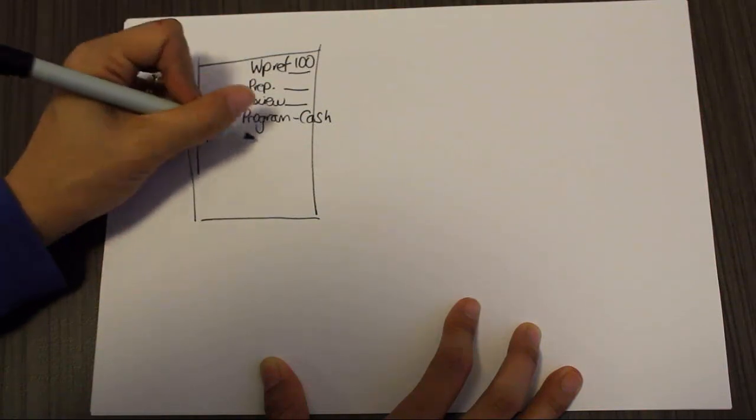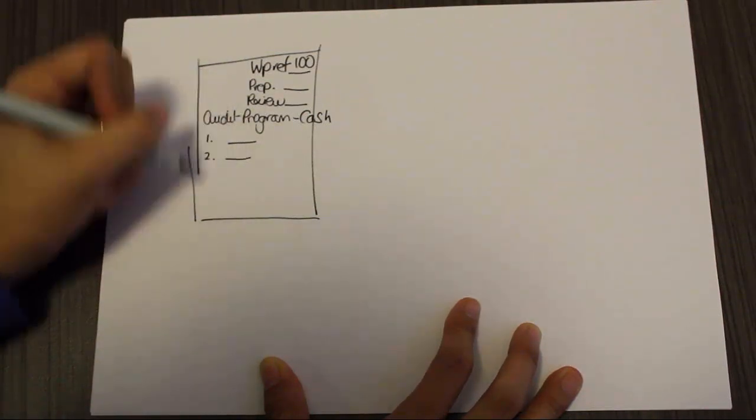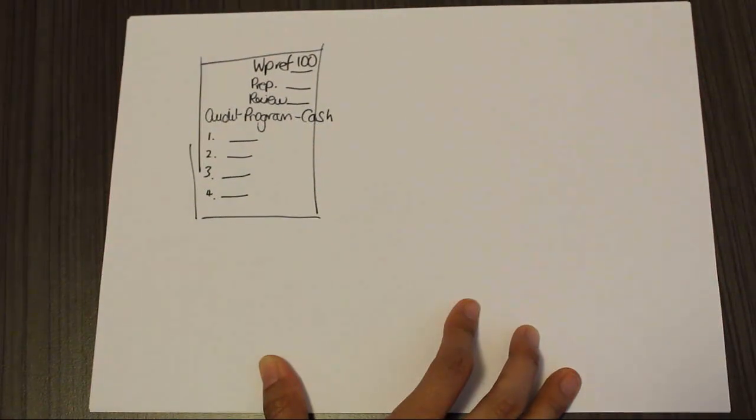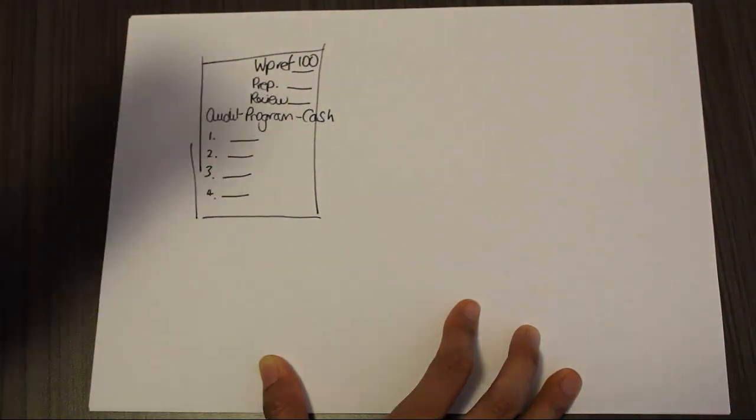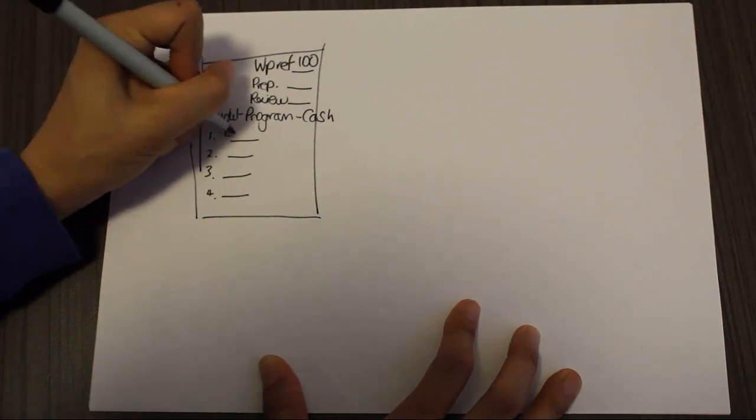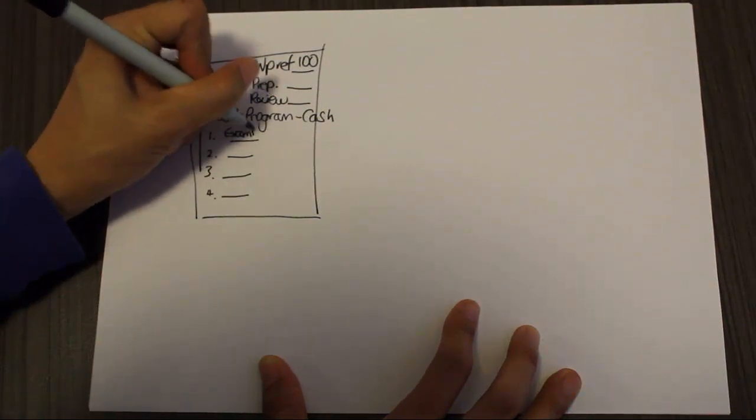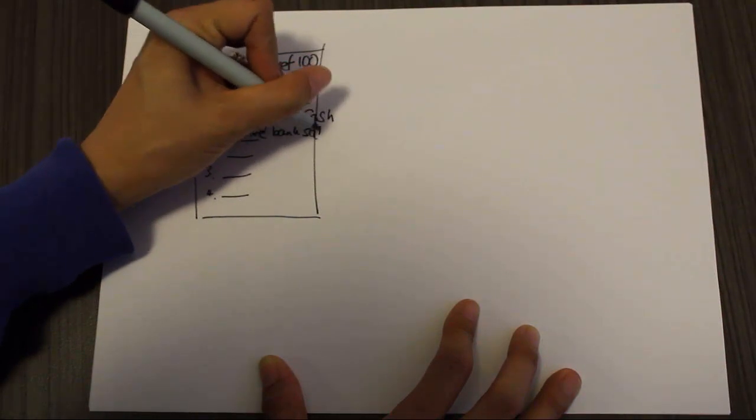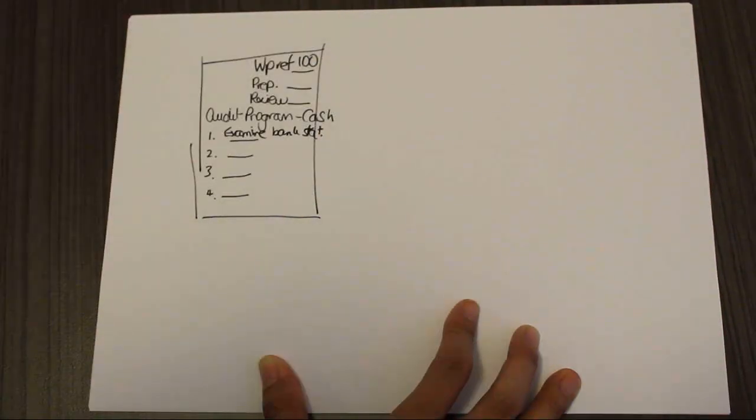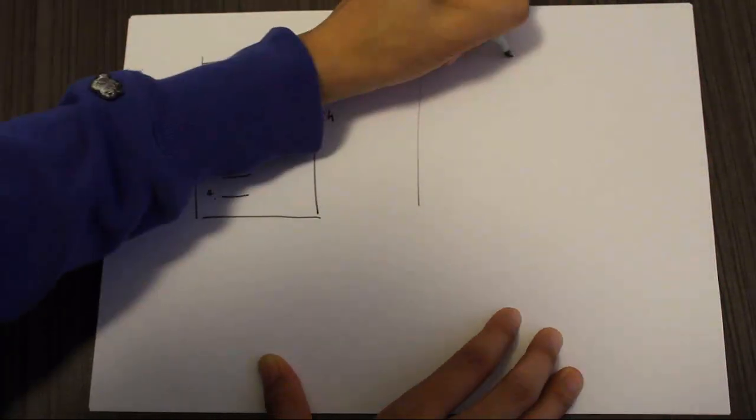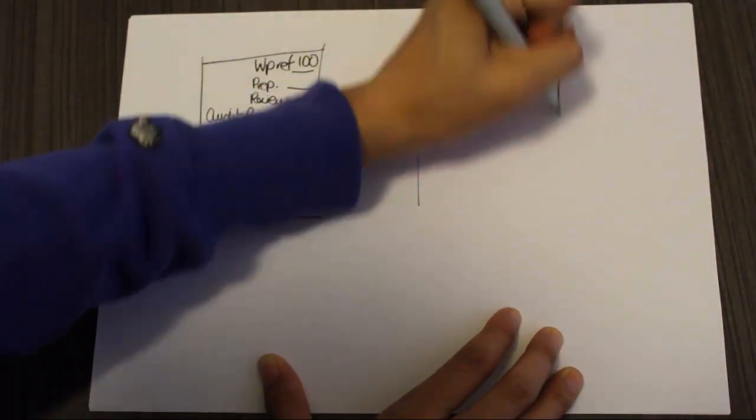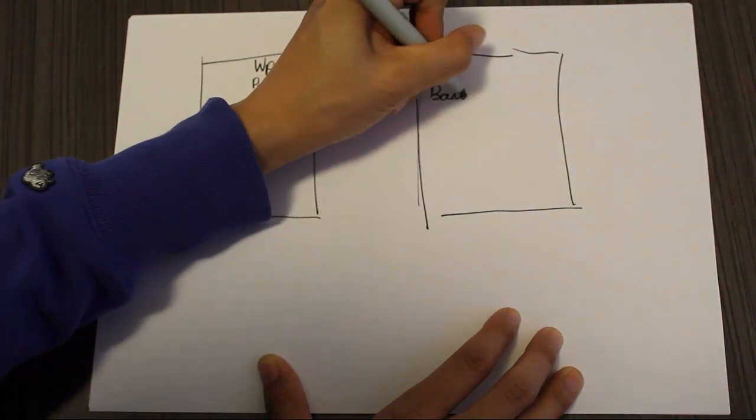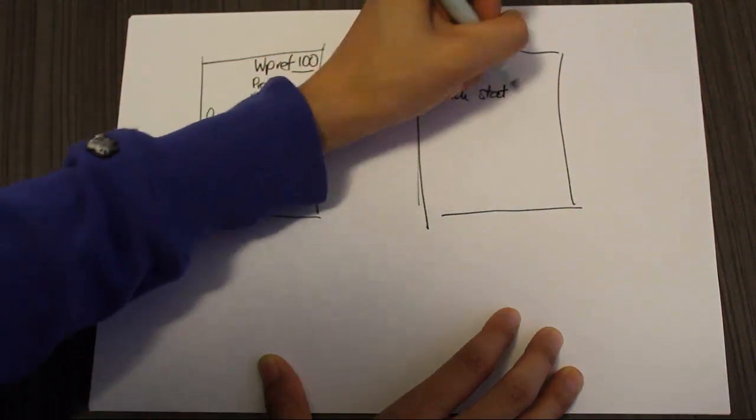But this one here is going to be an audit program for cash. And there's going to be a list of things the auditor needs to do. Now, one of those things is going to be to examine the bank statement. So we go away and we get ourselves a copy of the bank statement from the bank.